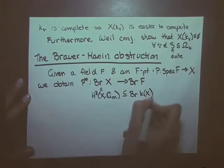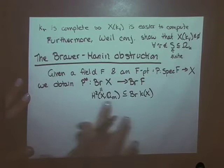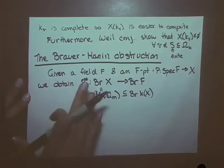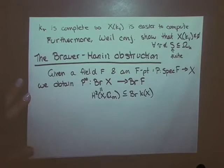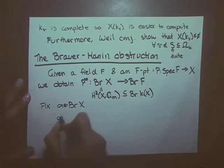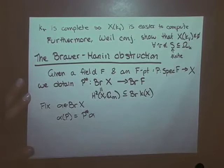For me, a Brauer class — as long as I'm away from the characteristic — is an element, a central simple algebra over the function field, whose residue is trivial at all codimension-one points. Given an f-point we get a map on the Brauer group, which I'll think of as evaluation. If you fix an α in the Brauer group of X, then α(p) will be the image of α under this map. Let's do an example.